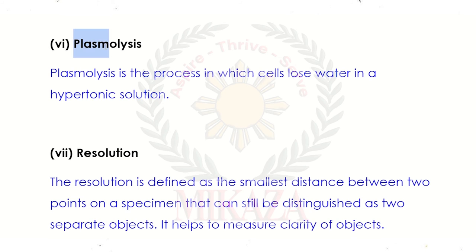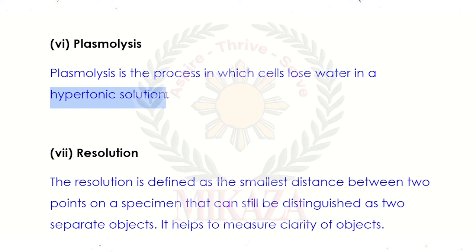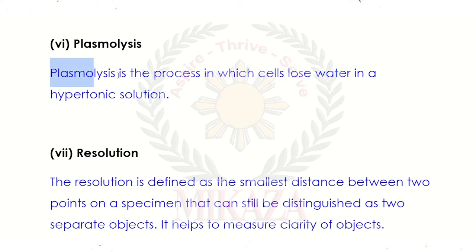Plasmolysis occurs when a cell is placed in a hypertonic solution, causing water loss from the cell. A hypertonic solution is one where the concentration of solute is higher than inside the cell, so water moves out. When the cell loses water, we call this plasmolysis.